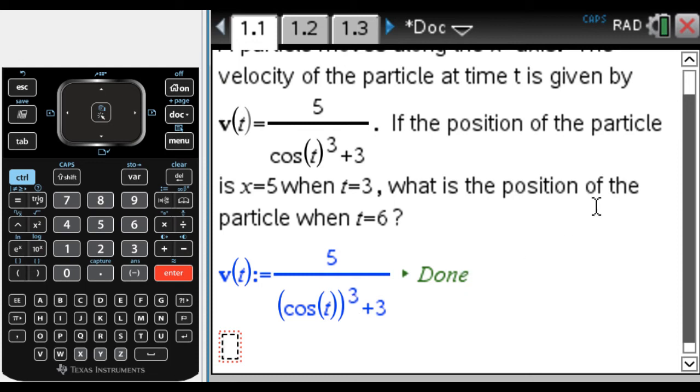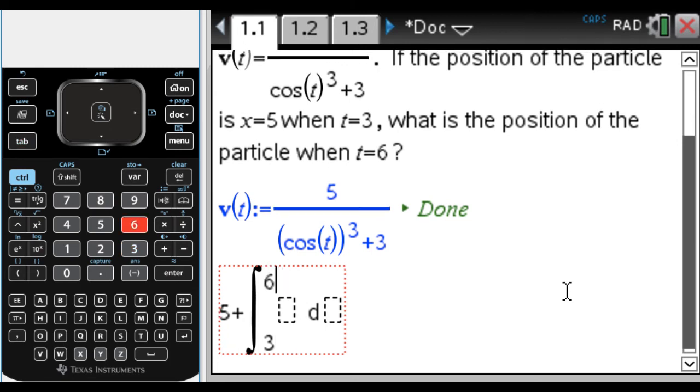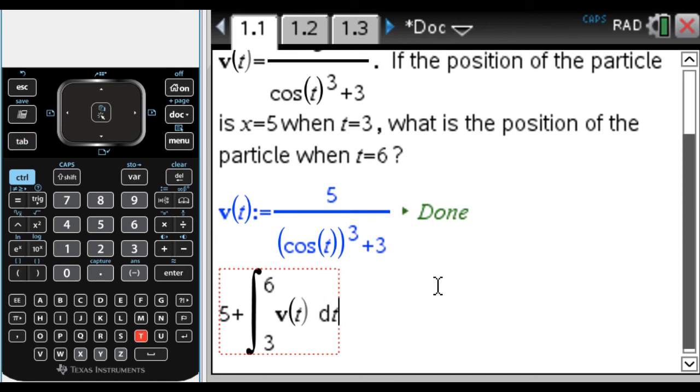And then what I want to do is where I start - that's the position at three - so five plus the integral. I'm going to use the shortcut, shift and then plus. It's the integral from three to six, because I know where I am at three - I'm at x = 5 at three - and I want to know where I am at six. So I need to find the displacement from three to six of v(t) with respect to t. I'm going to hit enter.